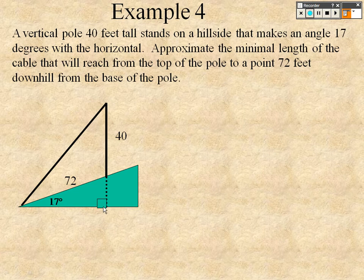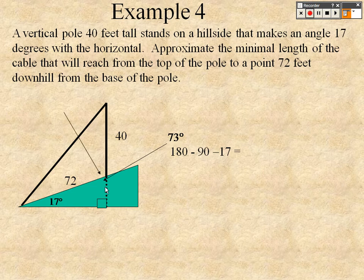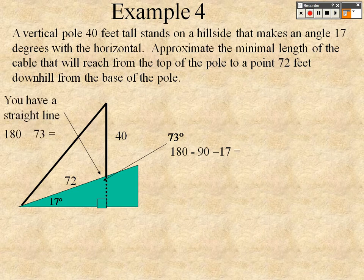If this is 72, what we can do is figure out what this angle is because that's 90, that's 17. So, 180 minus 90 minus 17 is 73 degrees. Then, I can figure out what the other side is because if you remember, straight lines are 180 degrees. So, 180 minus 73 tells me that this little angle in here is 107.